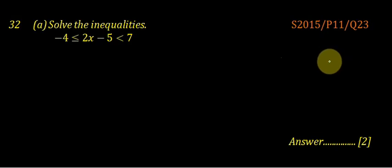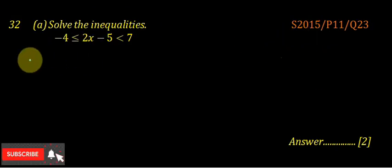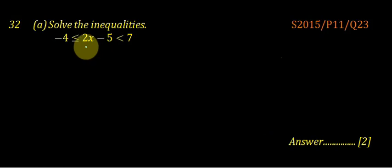Question number 23, paper 1, June 2015. Solve the inequalities: minus 4 is less than or equal to 2x minus 5, which is less than 7.